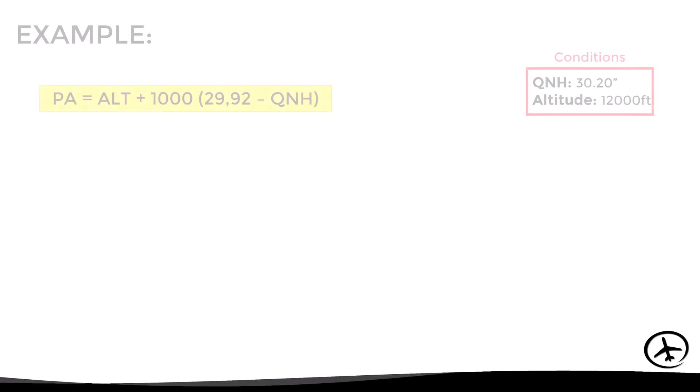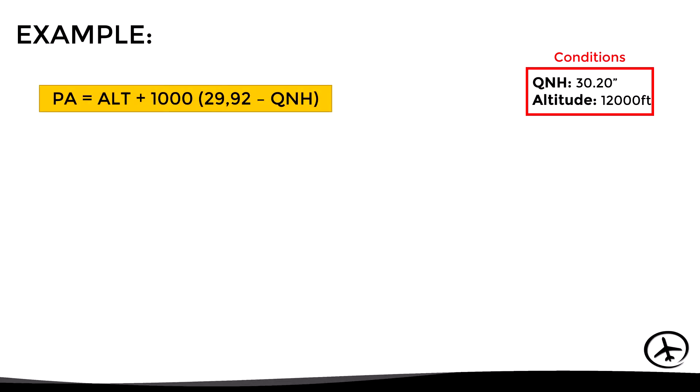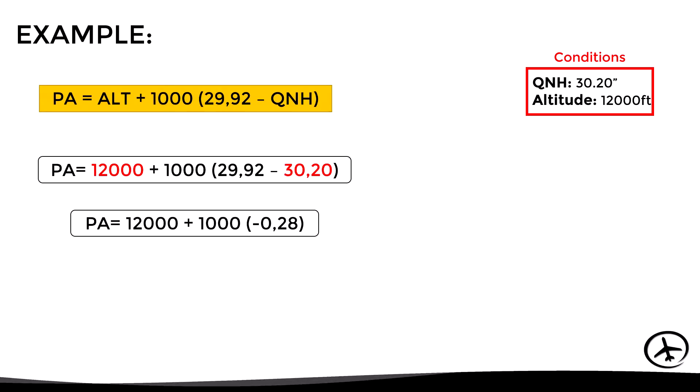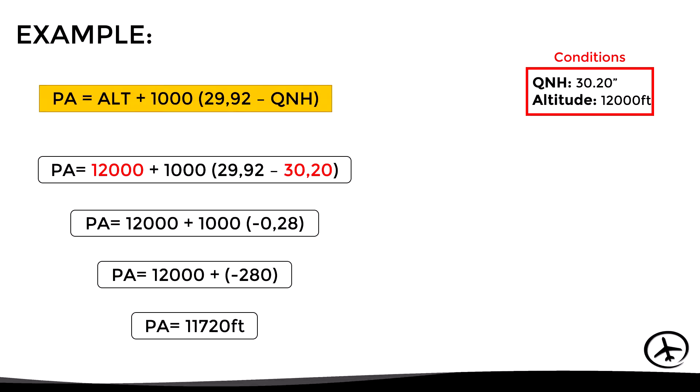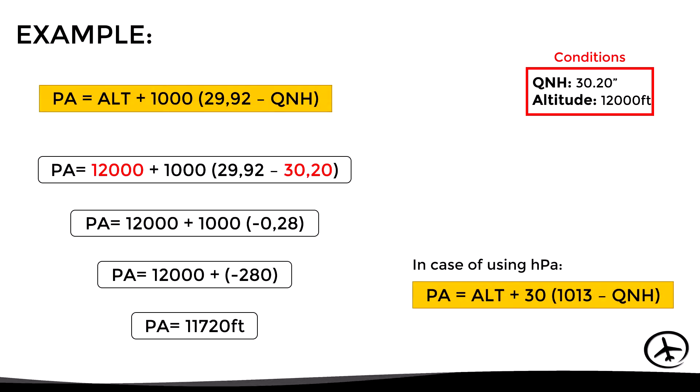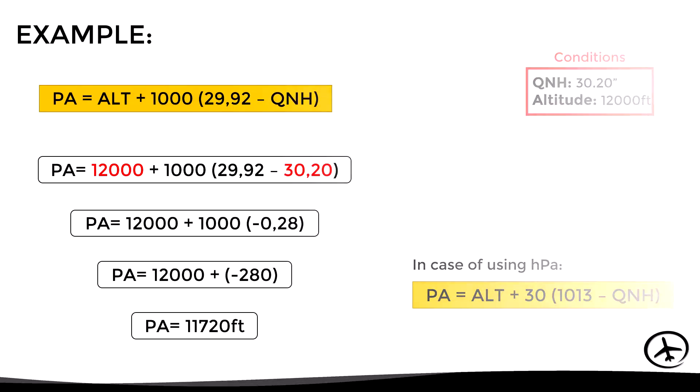Finally, let's see how to use the approximate formula using the same conditions. We just replace the indicated altitude and the QNH in the formula and do the math, obtaining a pressure altitude of 11,720 feet. It is important to mention that this formula is applicable only when using inches of mercury. If the QNH is expressed in hectopascals, we can use a modified formula.